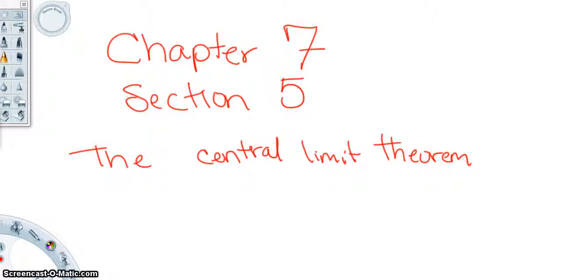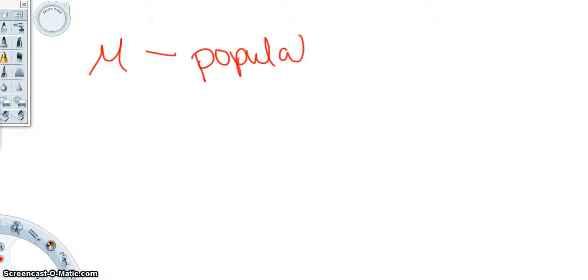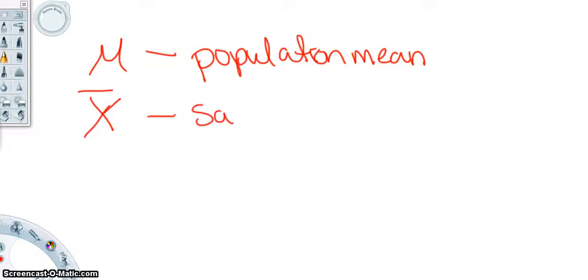In Section 5 of Chapter 7, we're going to be talking about the Central Limit Theorem. In addition to knowing how individual data values vary about the mean for a population, we also want to look at how they vary when we have samples from that population. Remember that mu was our population mean, and x bar was our sample mean. We're going to be looking at x bar now instead of our population mean.